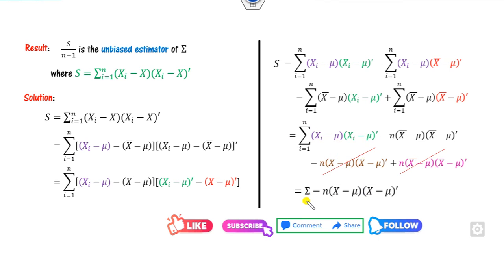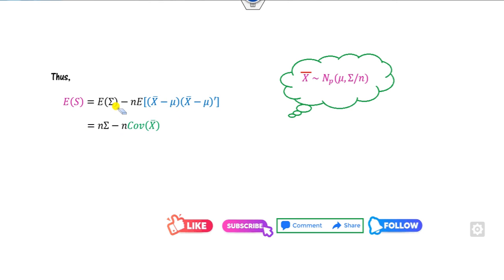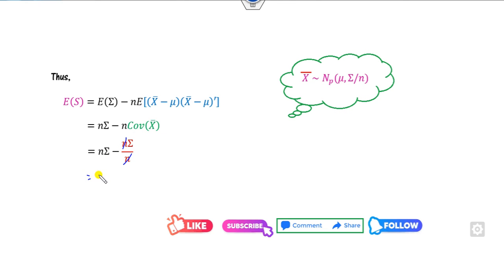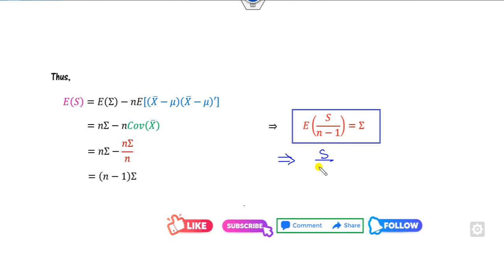The final result is S equals summation of (x_i minus mu)(x_i minus mu) transpose minus n times (x-bar minus mu)(x-bar minus mu) transpose. Taking expected values on both sides: expected value of S equals n times sigma minus the covariance of x-bar. Since x-bar follows the multivariate normal distribution, the covariance of x-bar is sigma divided by n. Substituting, we get expected value of S equals n times sigma minus sigma, which equals n minus 1 times sigma. Therefore, S divided by n minus 1 is the unbiased estimator of sigma.